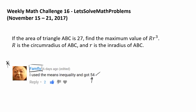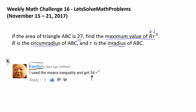There are many ways of thinking about this, but let me read the question first. If the area of triangle ABC is 27, we want to find the maximum value of capital R — the circumradius — times lowercase r cubed, where lowercase r is the inradius of ABC. One way you might think about this is: maybe we should look at the equilateral triangle.